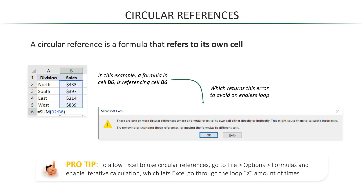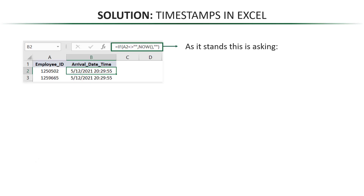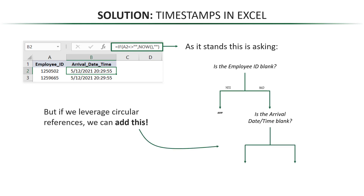So how does this fit into our timestamp issue? Right now our formula is asking: is the employee ID blank? If it is, then the arrival date and time stay blank. But if it isn't, then it returns the current date and time with the NOW function. We know this is only halfway right. But if we leverage circular references, we can add this to the logic: if the employee ID isn't blank, we can reference the arrival date and time cell itself and ask if that is also blank. If it is, we add a timestamp with the NOW function. But if it isn't — and the timestamp has already been added — then we just return that same timestamp. Easy peasy. Let's jump to Excel and do this ourselves.